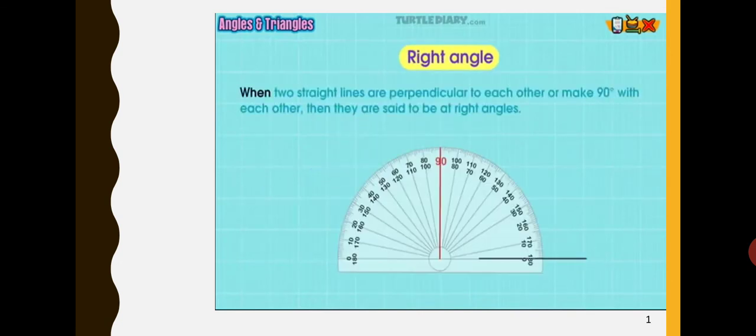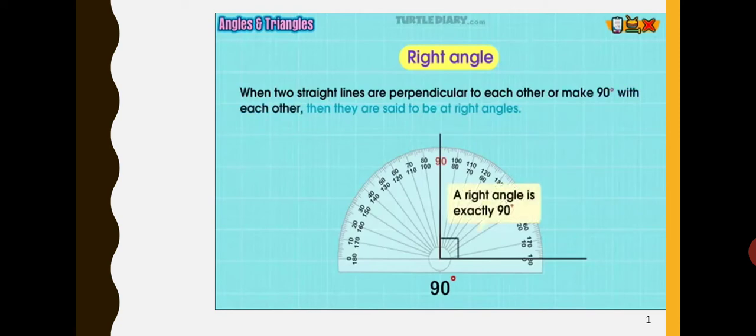When two straight lines are perpendicular to each other or make 90 degrees with each other, then they are said to be at right angles. Right angles are often shown with a box in the corner that lets you know that it is exactly 90 degrees.